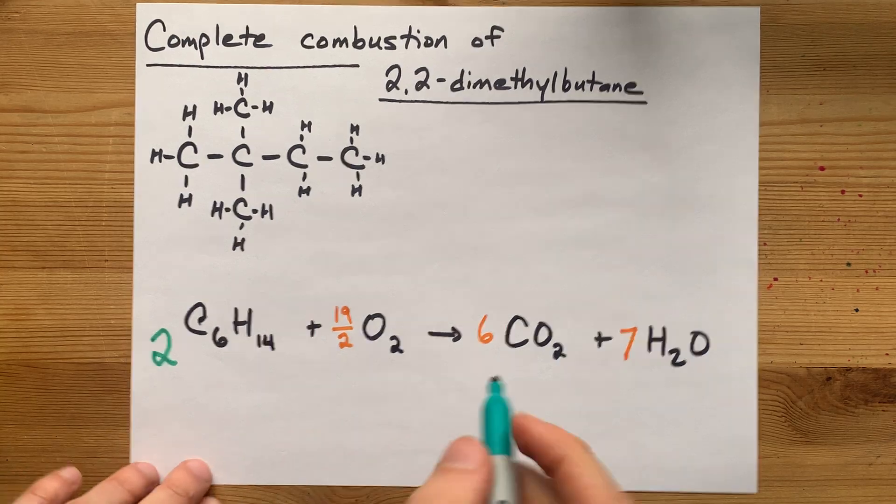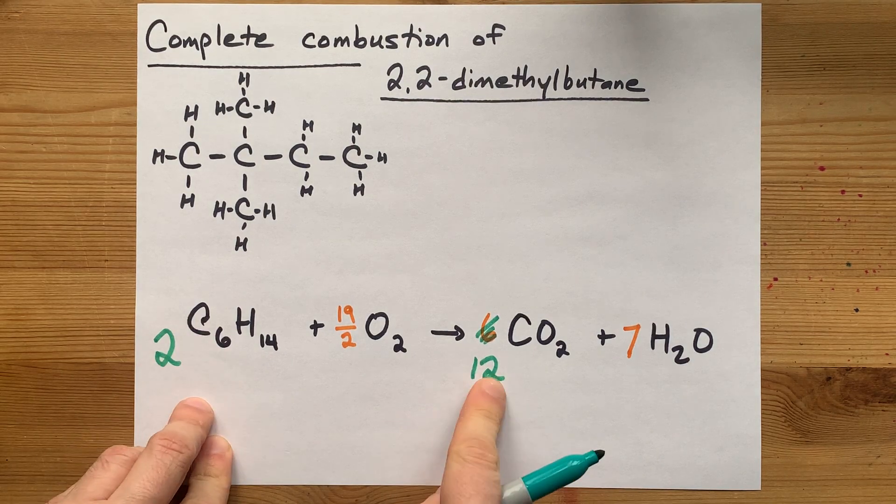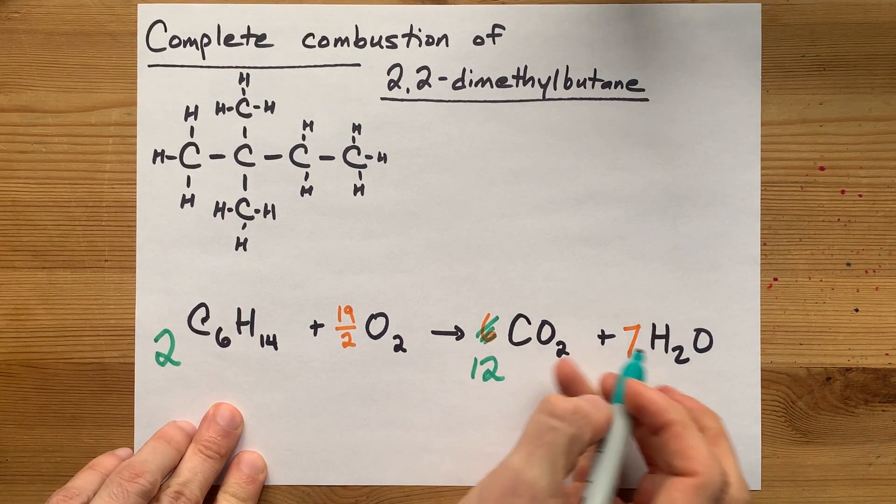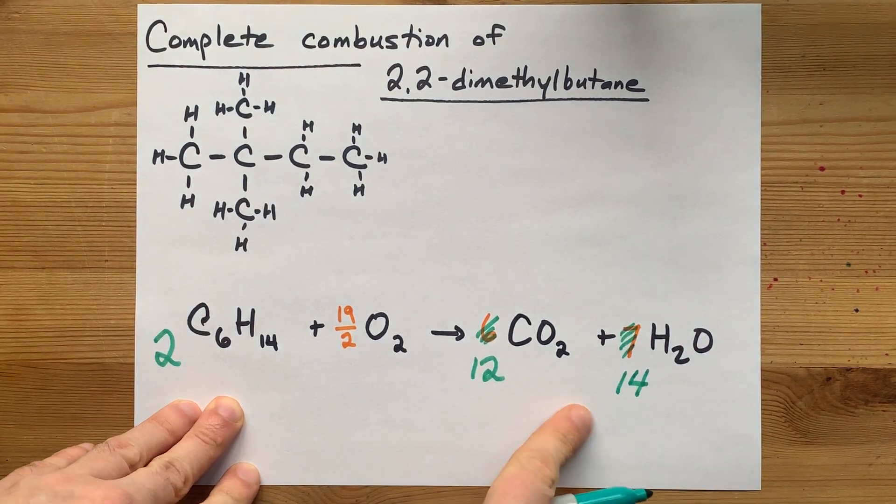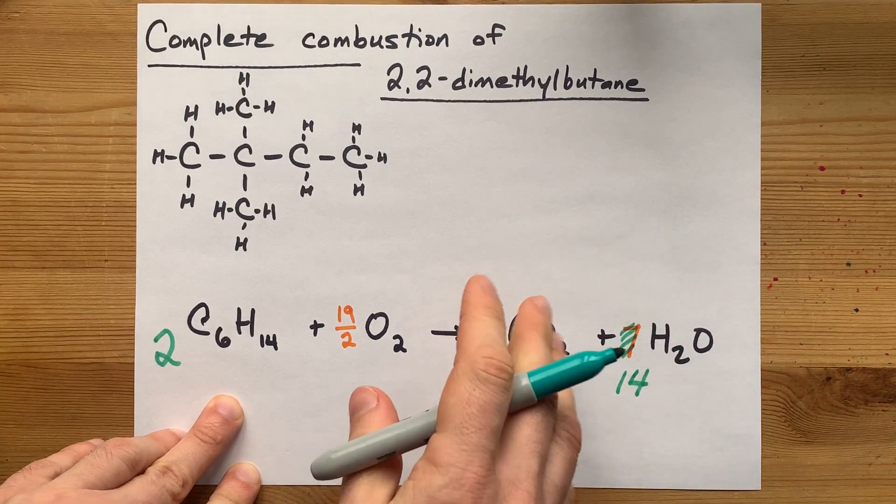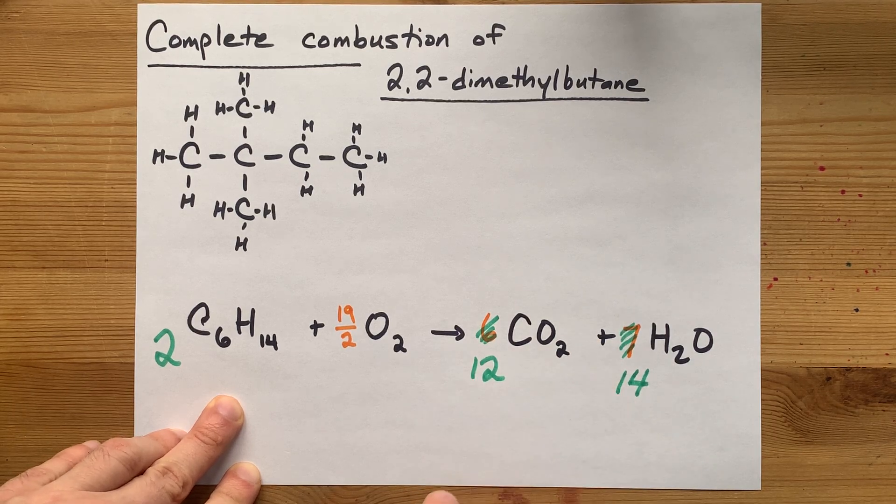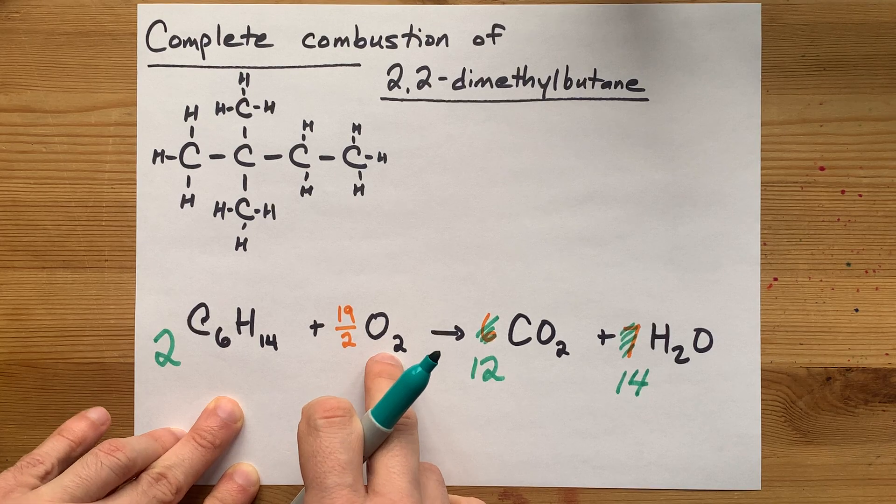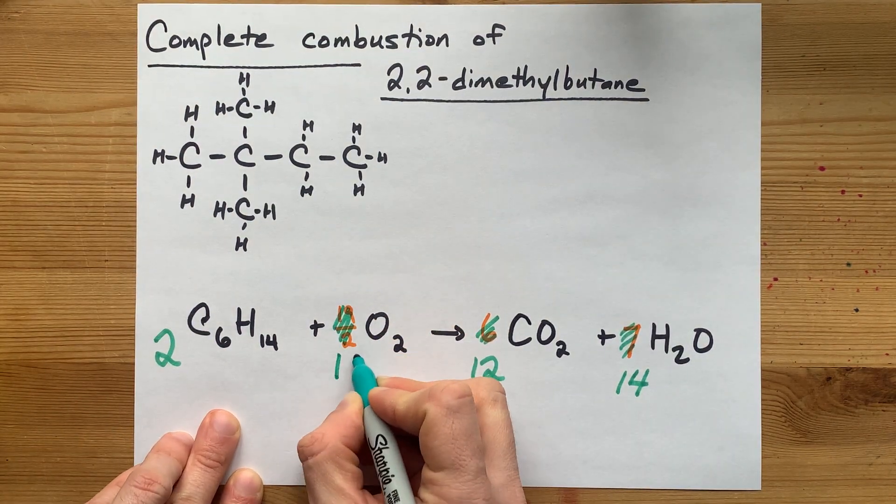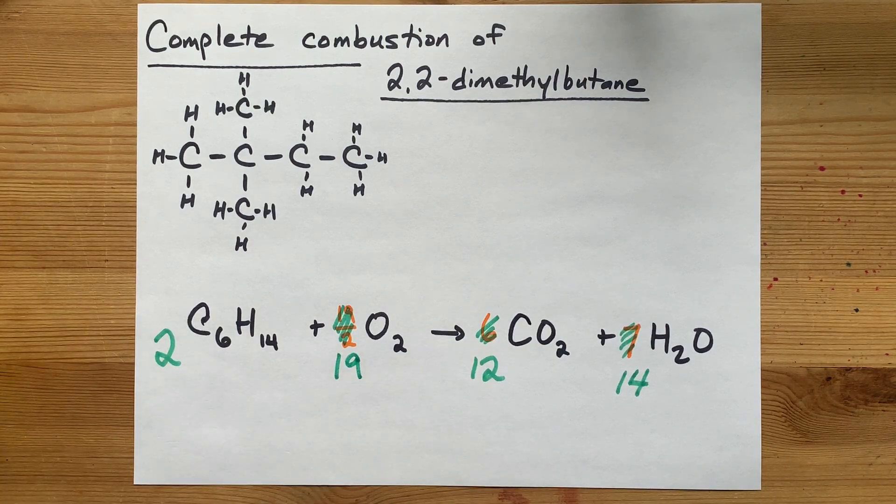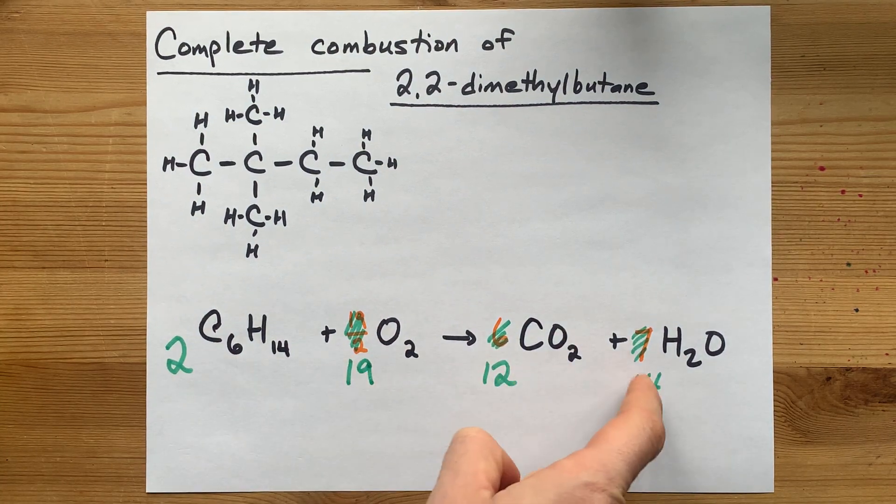Two of these will produce 12 of those. See? Two times six is 12. That automatically becomes 12. And similarly, I double this one to make 14. Now, that has the effect of doubling the number of oxygens, which automatically makes it an even number. Twelve times two is 24, plus 14 is 38. And how many packs of two do I need to get 38? It happens to be double that fraction. See, I just doubled all the coefficients. And there's my balanced, complete combustion of 2,2-dimethylbutane with only whole number coefficients.